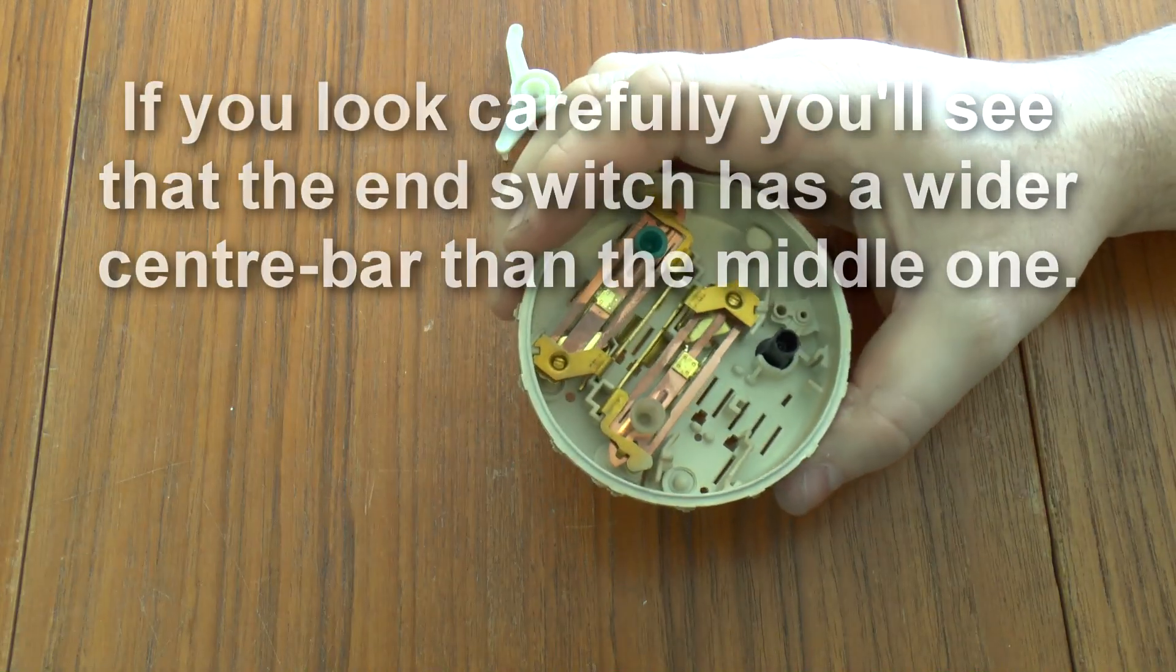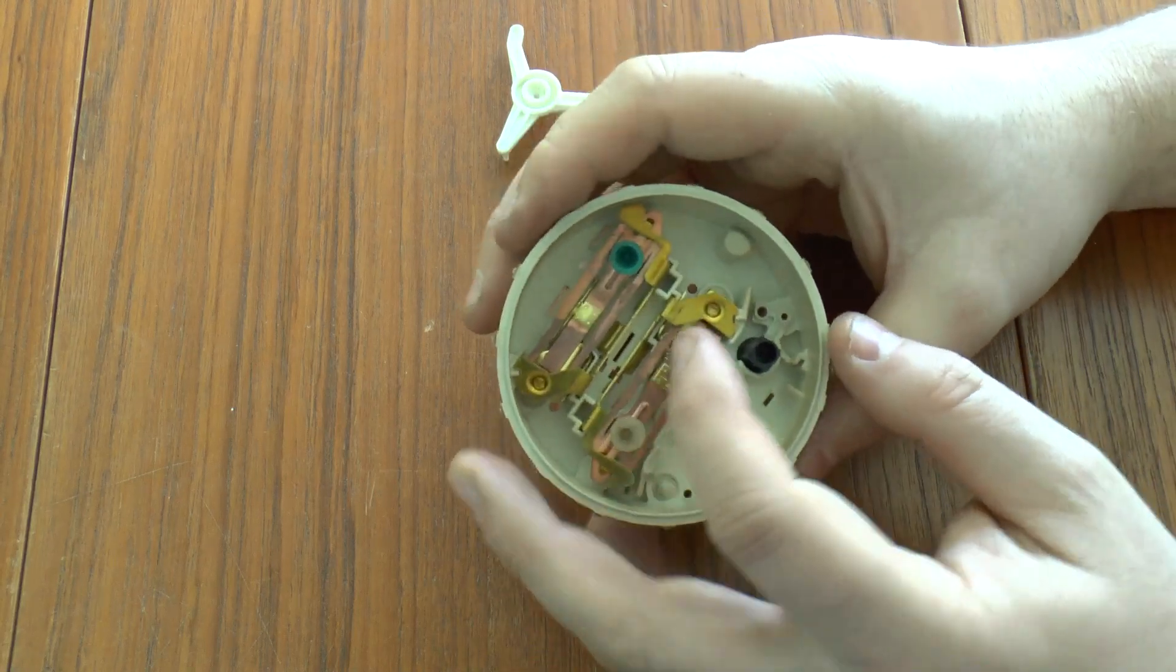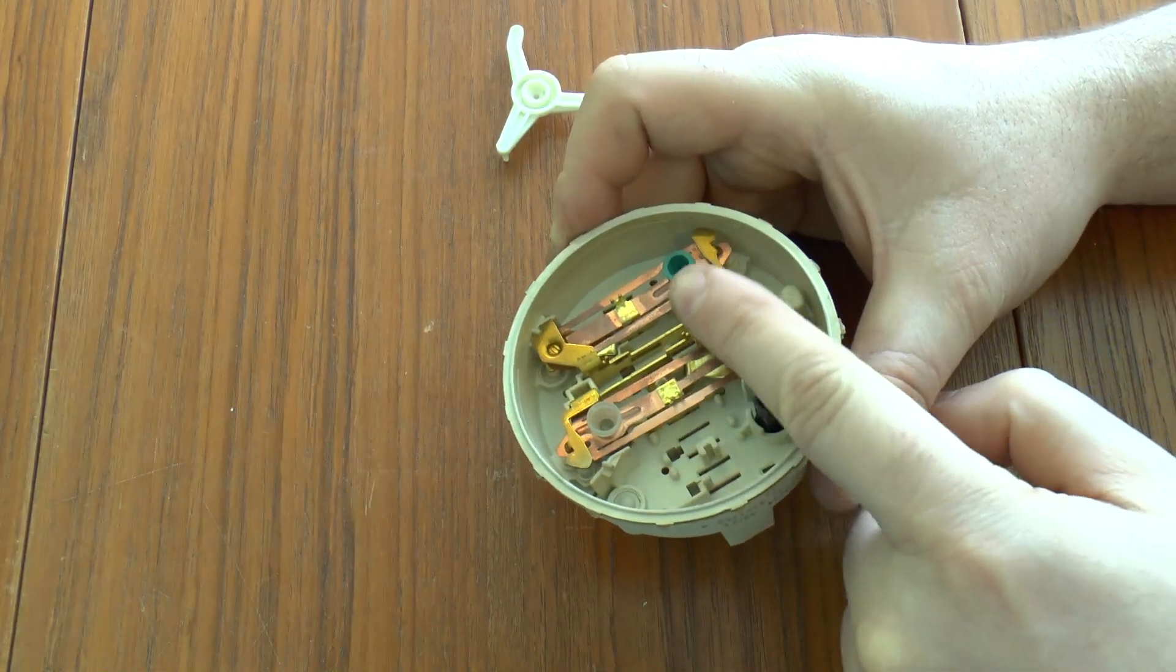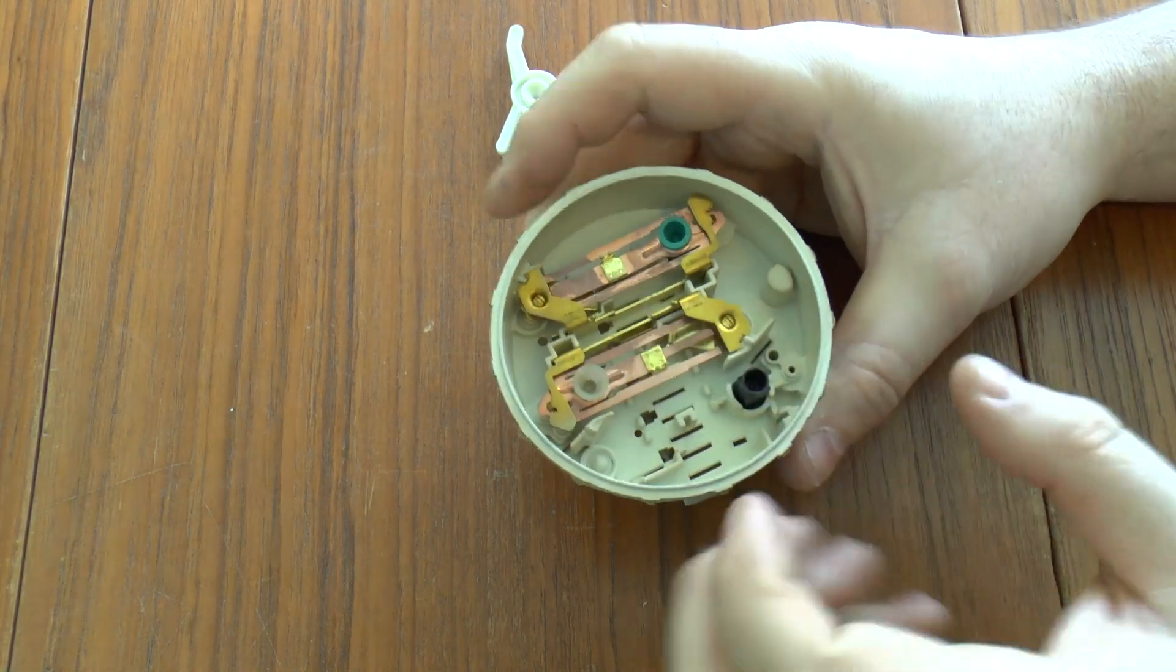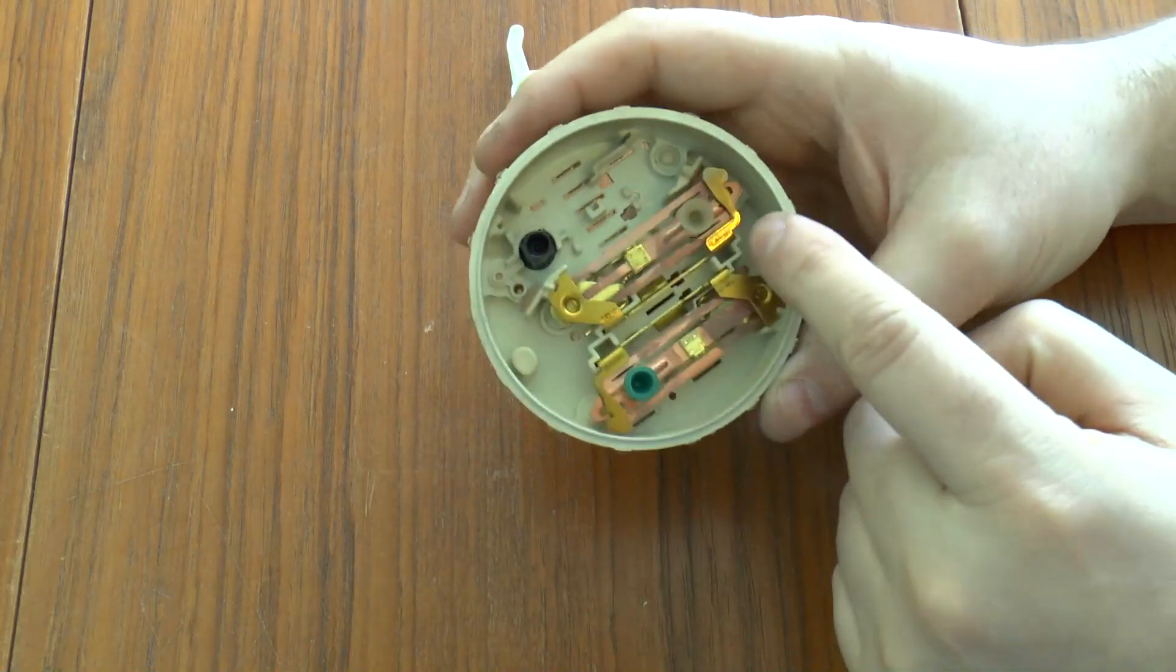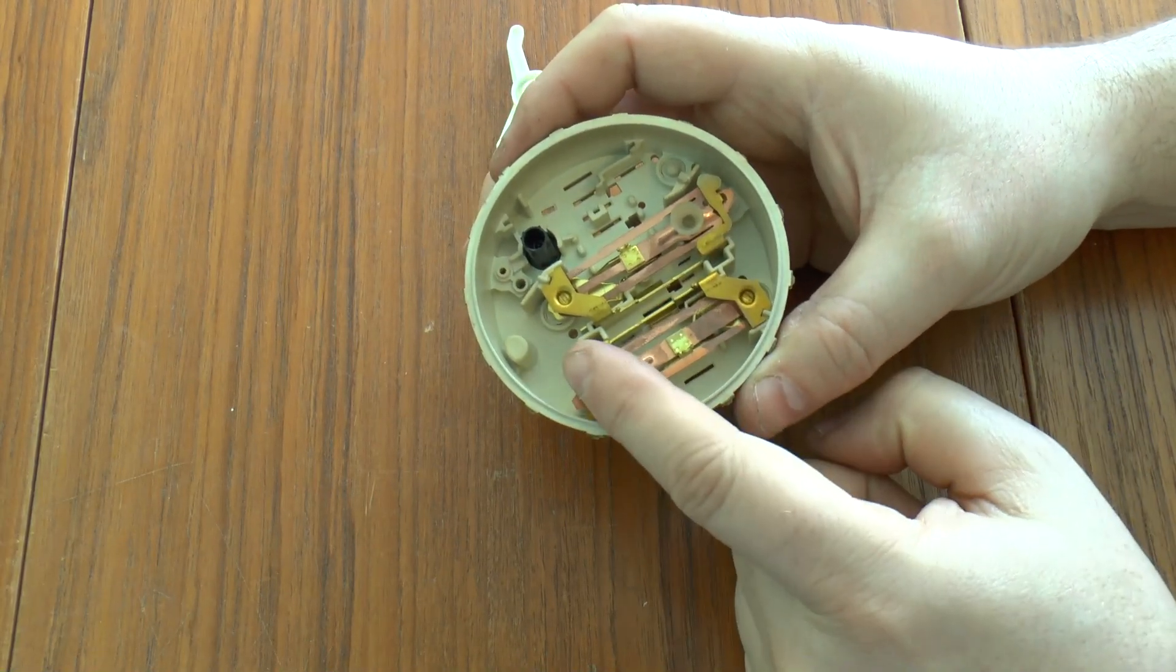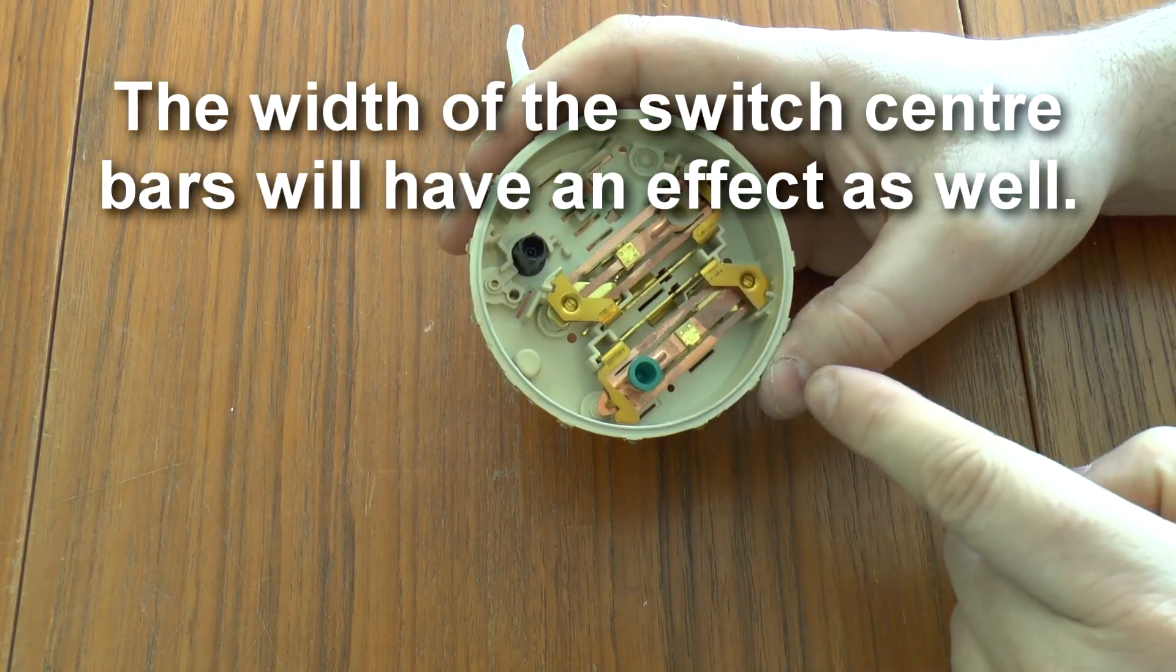Also you'll see in here the other side of those set screws. There's one there, there's one underneath that as well in line with it where the spring is, and there's one at the far end. The same goes for this one: one there, one under the spring, and one under the far end. By adjusting those you can adjust the characteristics of the switch.